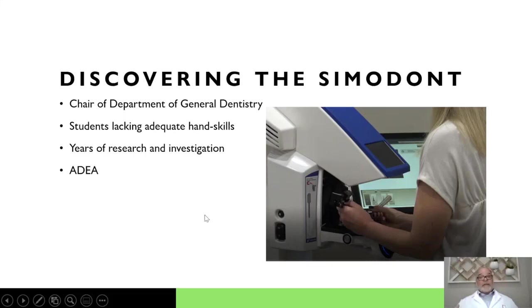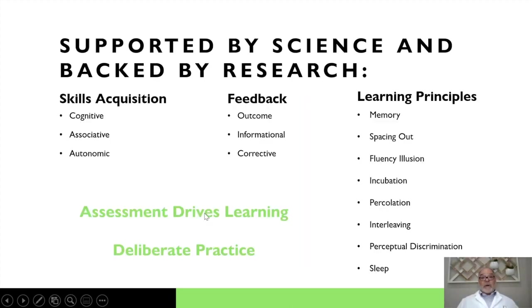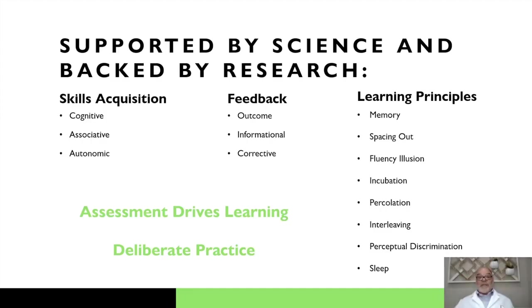This is supported by science and backed by research. I encourage everyone to go to our website, prometheandentalsystems.com, where we have listed a number of research articles highlighting the development and advancement of this technology. Learning science — if you go to Thad Polk's lecture series on the learning brain, he talks about skill acquisition first being the cognitive phase, where you have to think about every move, then the associative phase, applying deliberate practice with specific corrective measures, and ultimately through deliberate practice and time these actions become autonomic. So you go through cognitive, associative, and autonomic phases of skill acquisition.